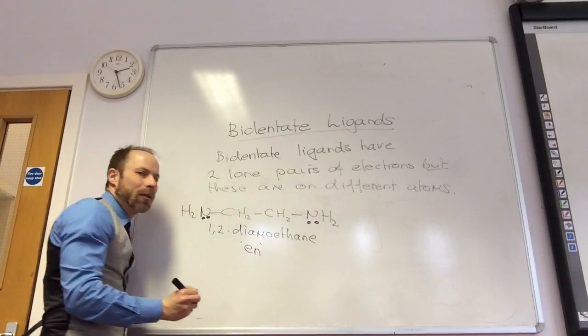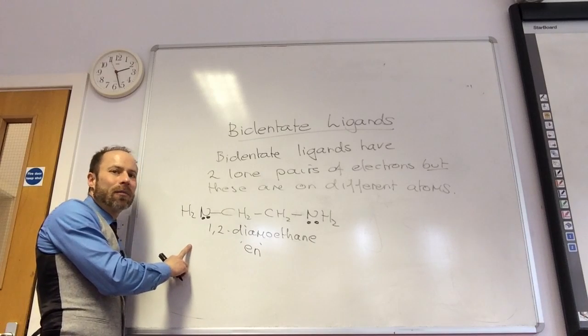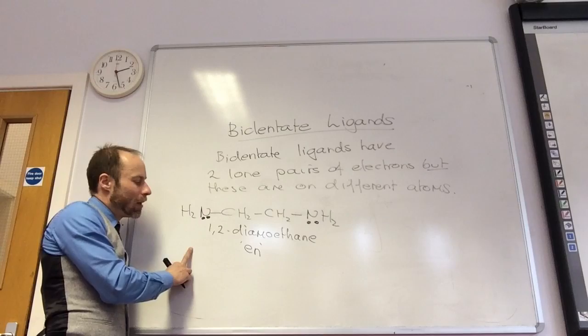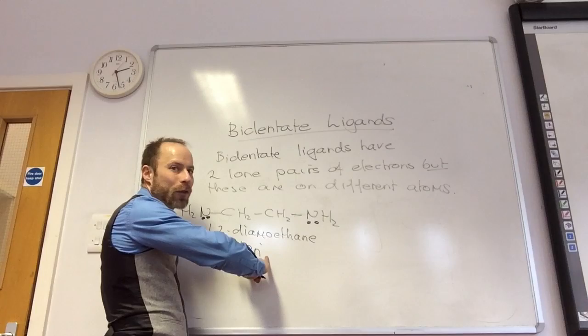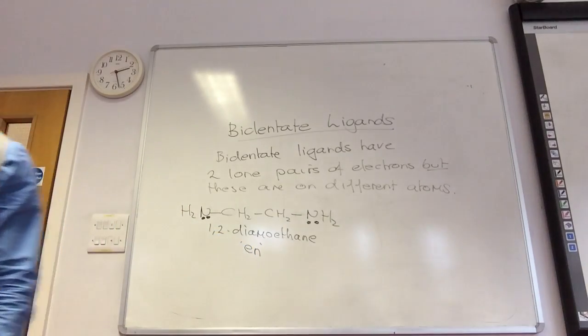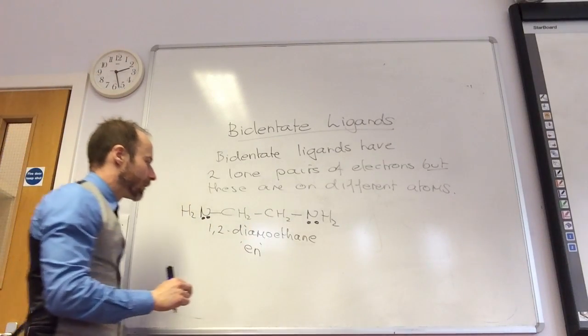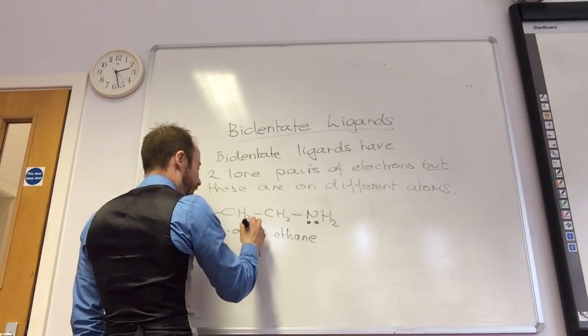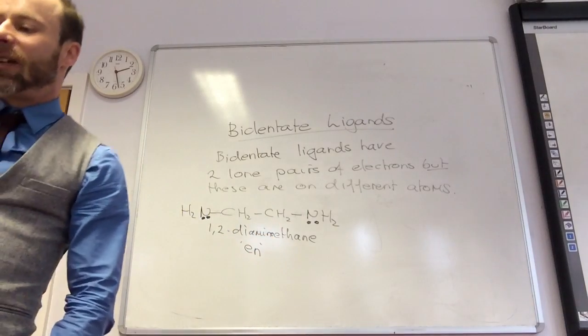But it's often shortened to EN. So often it's just called EN ligand because this is very common. The whole thing is called 1,2-diaminoethane. But as it's shortened, often when we shorten it, we just have to use EN. Yeah, so you've got two amino groups.